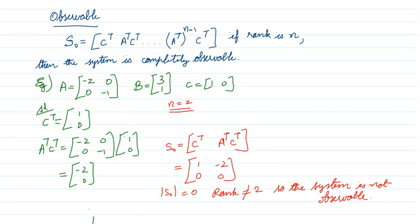Here a state space model is given with matrices A, B, and C. First, find the number of variables from the A matrix. A is a 2×2 matrix, so N = 2. The observability matrix is S₀ = [Cᵀ | AᵀCᵀ], since we go up to N−1 = 1. For C = [1 0], Cᵀ becomes [1, 0]ᵀ. Multiply AᵀCᵀ and you get [−2, 0]ᵀ. Taking the determinant of S₀ gives 0. Since the rank is not equal to 2, the system is not observable.